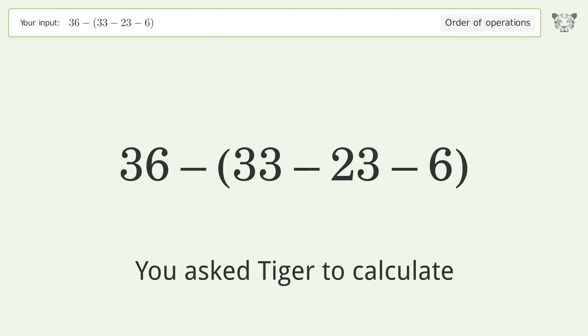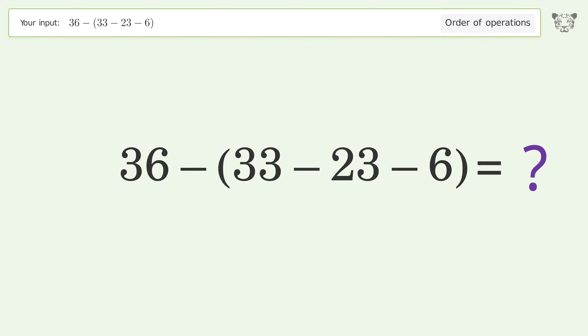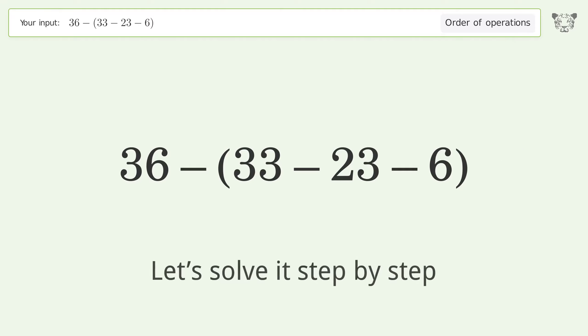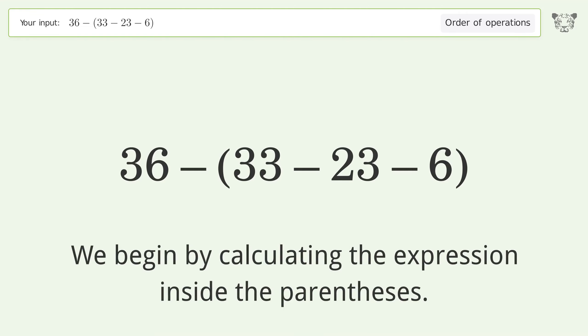You asked Tiger to calculate. This deals with the order of operations — the final result is 32. Let's solve it step by step. We begin by calculating the expression inside the parentheses.